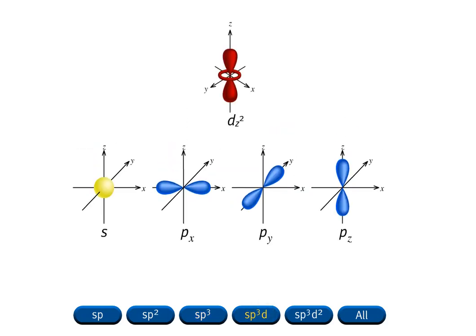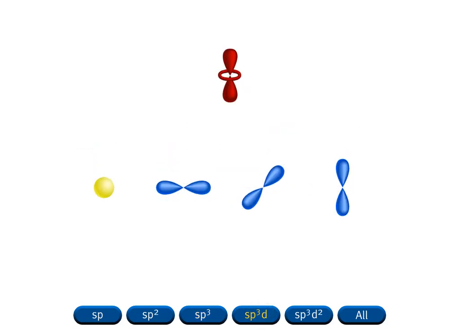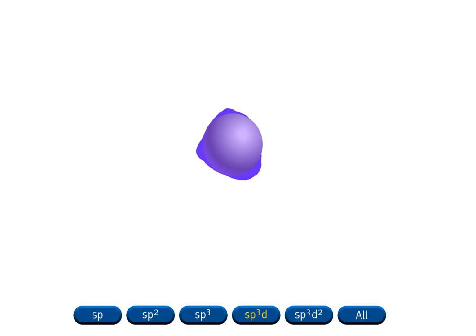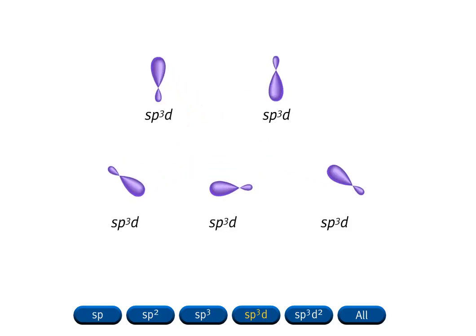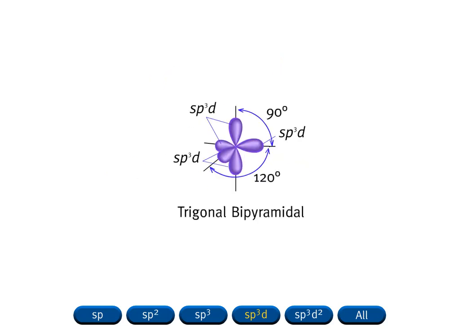Mixing an s orbital, three p orbitals, and a d orbital generates five sp3d hybrid orbitals. Note that the number of hybrid orbitals produced is equal to the number of atomic orbitals that are hybridized. The set of five sp3d hybrid orbitals has a trigonal bipyramidal arrangement. The angles between orbitals are 120 degrees in the trigonal plane and 90 degrees between orbitals in the plane and those above and below the plane.